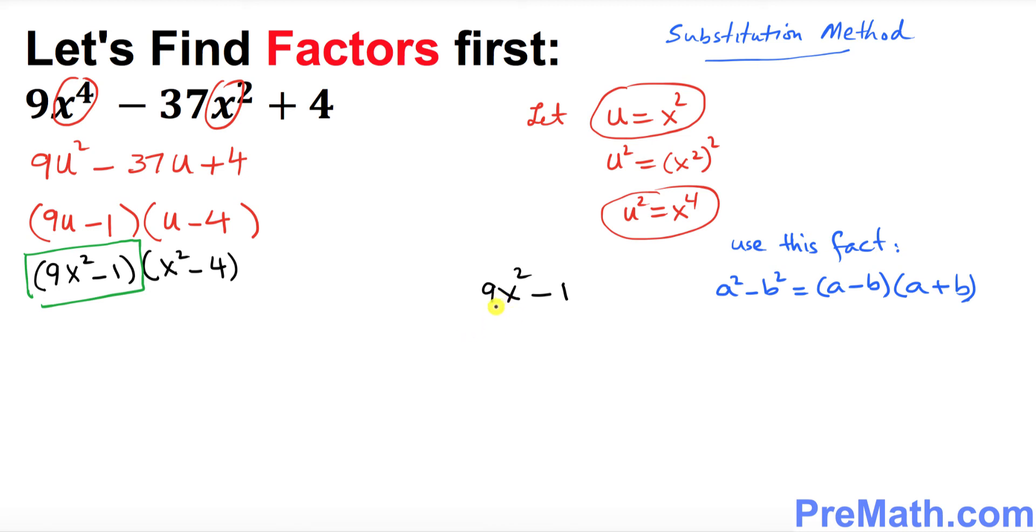I can say 9x square could be written as 3x and then power 2, that's the same as 9x squared, and 1 could be written as 1 square. So right now this 3x becomes our a and 1 becomes b, so we can use this fact. This could be written as 3x minus 1.